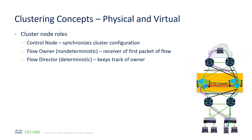The nodes of the cluster can have several roles. There is the control node, which synchronizes the cluster configuration. For any given flow, the flow owner is simply the node that receives the first packet of the flow. The flow owner will contact the flow director, which is deterministic, and the flow director will keep track of the owner. If a different node receives a packet that is not the first packet of the flow, it will query the flow director. The flow director will tell it where the flow owner is, and the packet will be redirected to the flow owner.